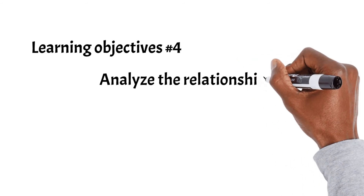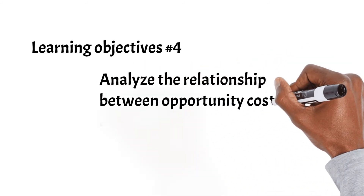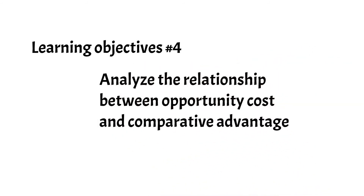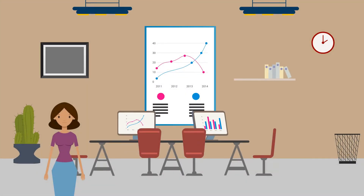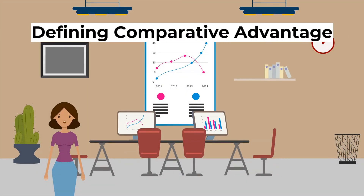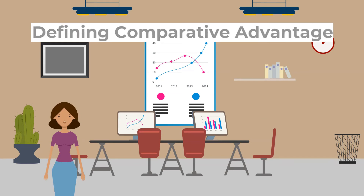The fourth learning objective is to analyze the relationship between opportunity cost and comparative advantage. A country has a comparative advantage over another when it can produce a good or service at a lower opportunity cost.